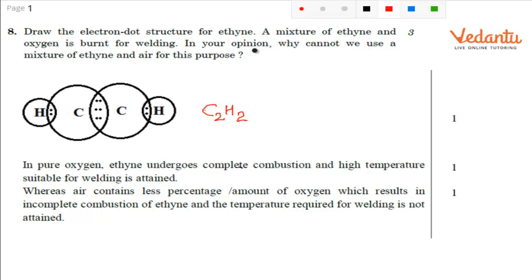In your opinion, why cannot we use a mixture of ethane and air for this purpose? Very simple — in air, the percentage of oxygen is less. It is around 21% by volume. So, if the percentage of oxygen is less in air, ethane will not go for complete combustion. It will actually go for incomplete combustion. And if it is going for incomplete combustion, high temperature will not be attained and that will not be suitable for welding.